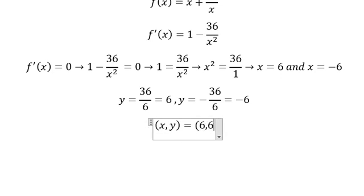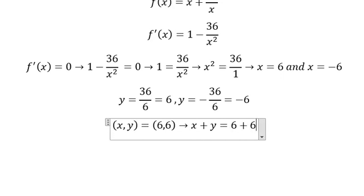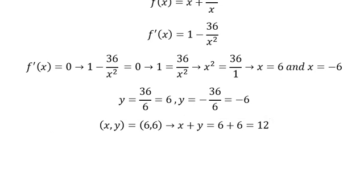When x equals 6, y equals 6, so x + y equals 6 + 6 equals 12. And the second one, (x,y) = (-6,-6), so x + y = -6 - 6 = -12.